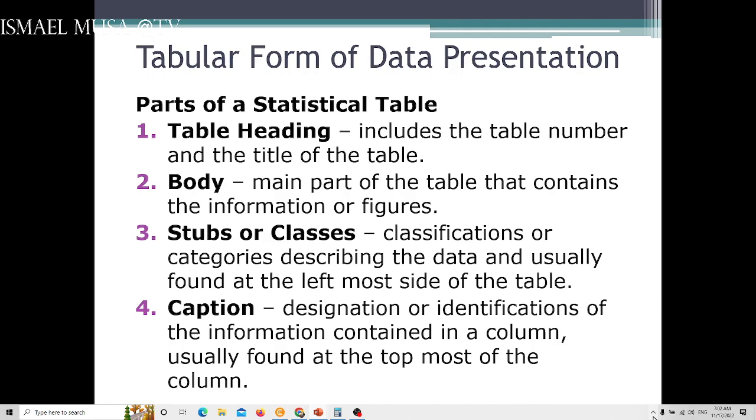Let's talk about the body. The body is the main part of the table that contains the information or the figures. Then another part is the stubs or classes. This is the first column in your table, the first column in the statistical table.